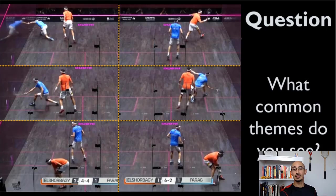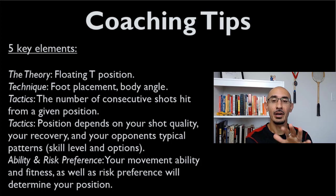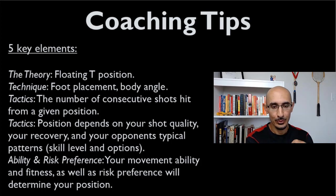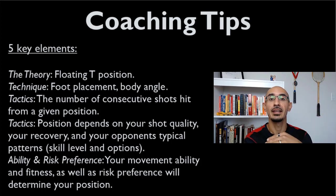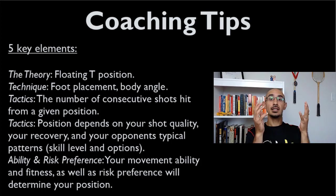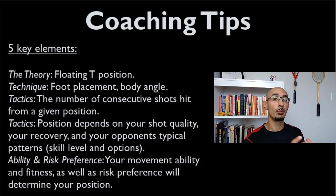In the mid, Shorbagi is looking at the ball and moving sideways. In the front, Farag is moving forward with a particular foot position. Before I get into those details, let's talk about the theory. There's this idea of the floating T. Your foot placement and body angle shifts depending on where your opponent is, the quality of shot you've hit, your opponent's patterns, and the number of consecutive shots from the same position — all of that influences your floating T position.